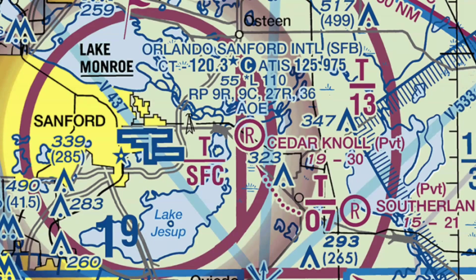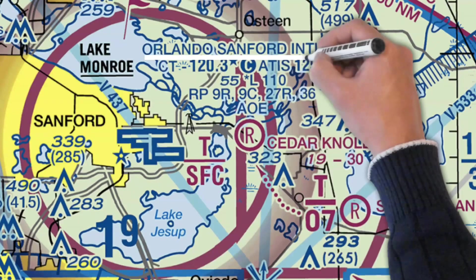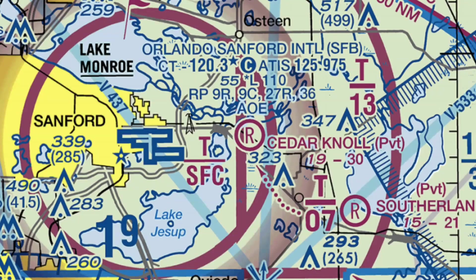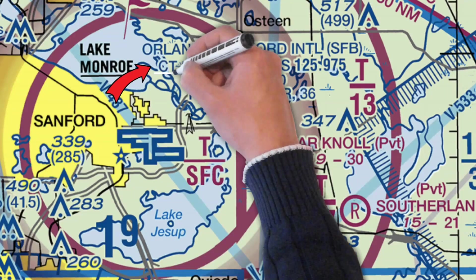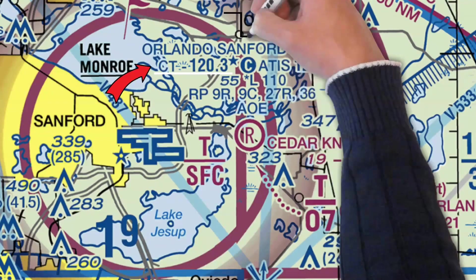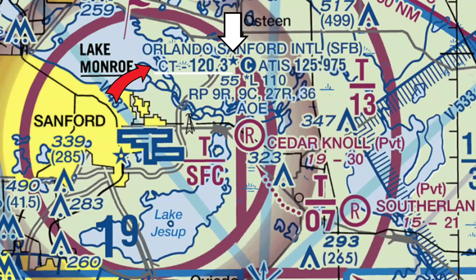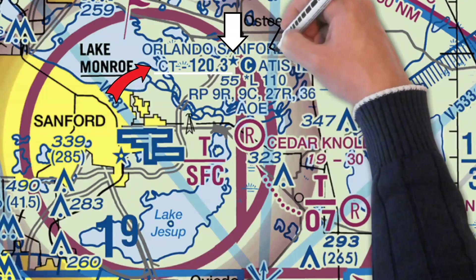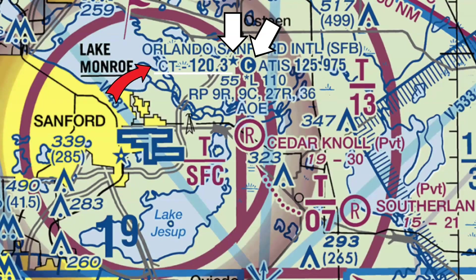Let's break down the airport information label. On the first line we see the airport's name along with its location identifier. On the second line, the letters CT followed by a frequency let us know this airfield has a control tower — which we already knew because the runways are blue — and this is the frequency it uses. A little star next to it means the tower only operates part time; you'd check the chart supplement for the hours. The C stands for CTAF — when the tower is not operational, this frequency reverts to the Common Traffic Advisory Frequency.